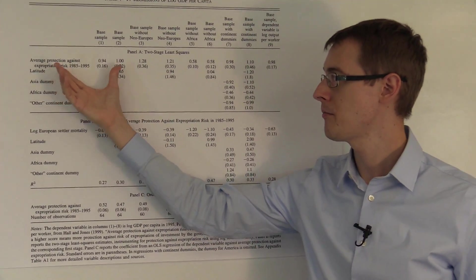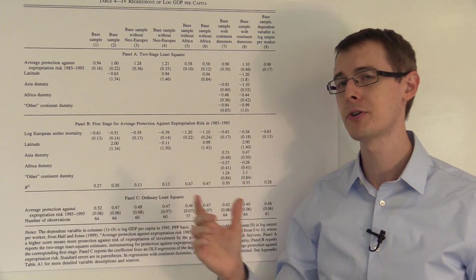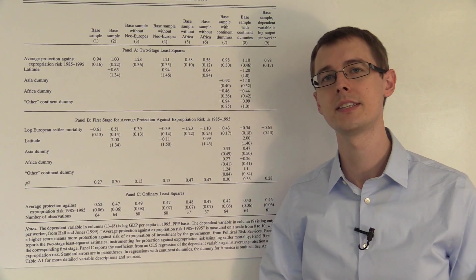They find that property rights actually do have a causal effect on economic development by using instrumental variables analysis where their instrument is log European settler mortality.